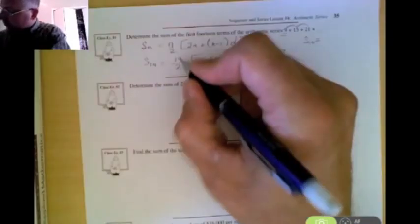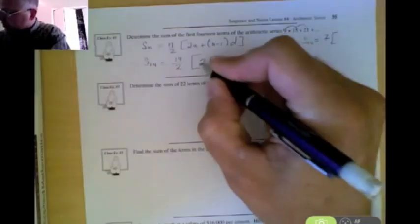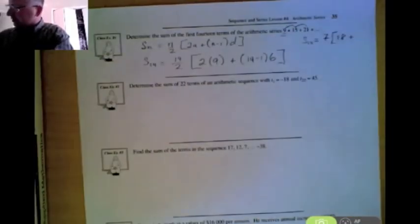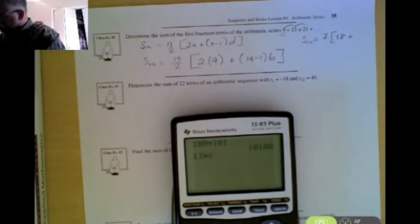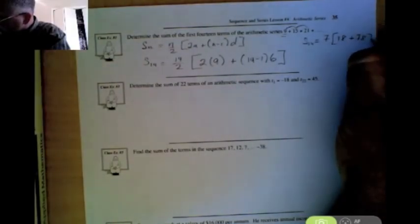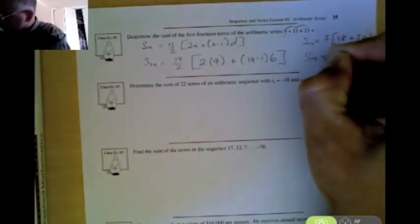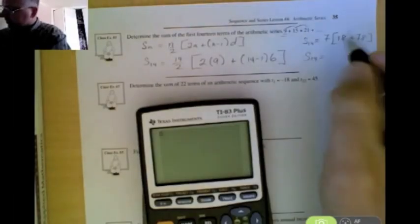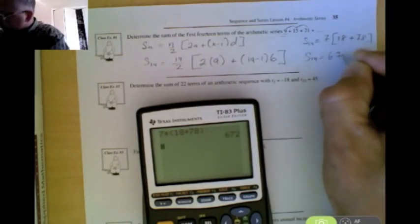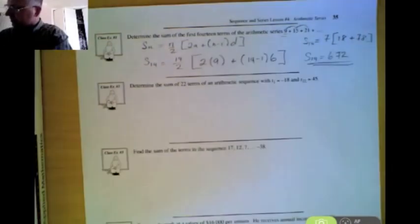So if we start working this out, s of 14 is going to be 14 over 2, which is 7, times 2 times 9 is 18, plus 13 times 6. 13 times 6 gives us 78. So now we can find the sum of the 14 terms just by typing in this whole expression into our calculator. We can go 7 times, in brackets, 18 plus 78, close the brackets, tells us the sum of those 14 terms is 672.